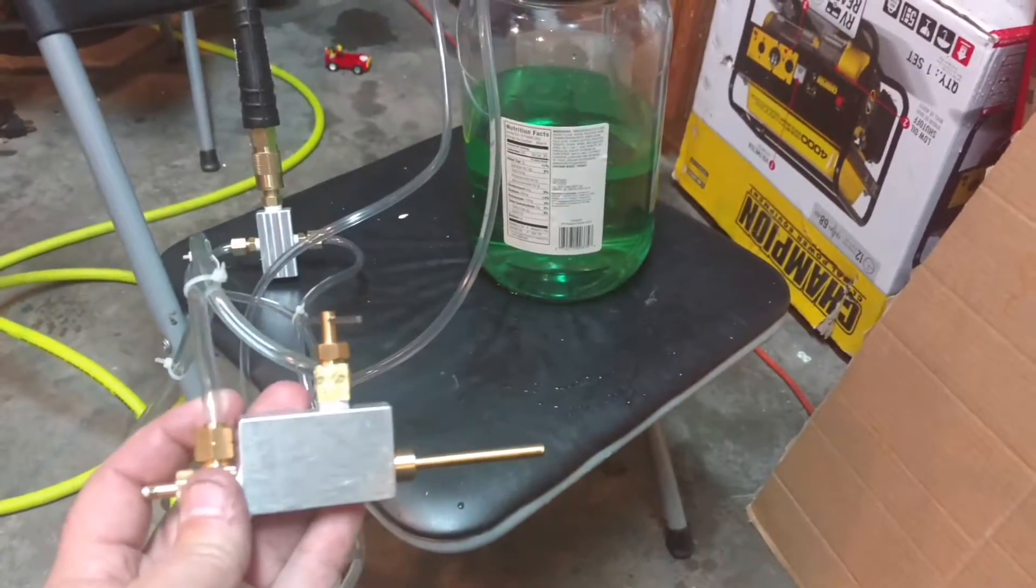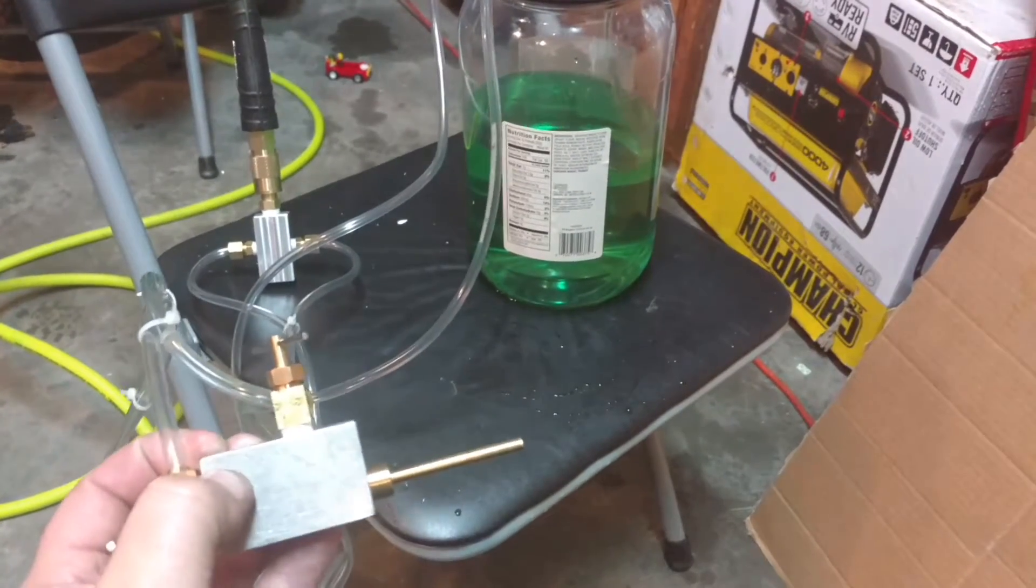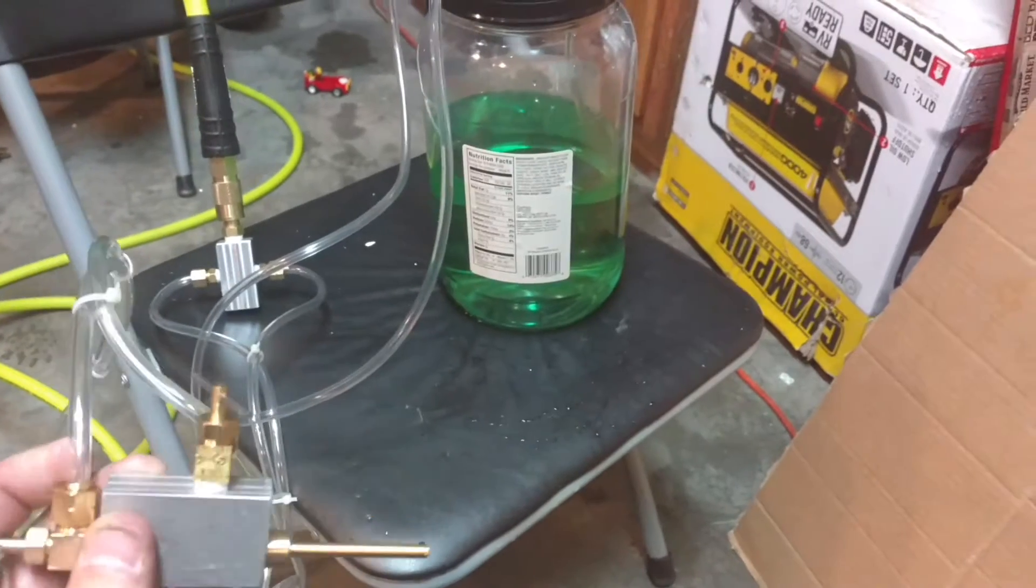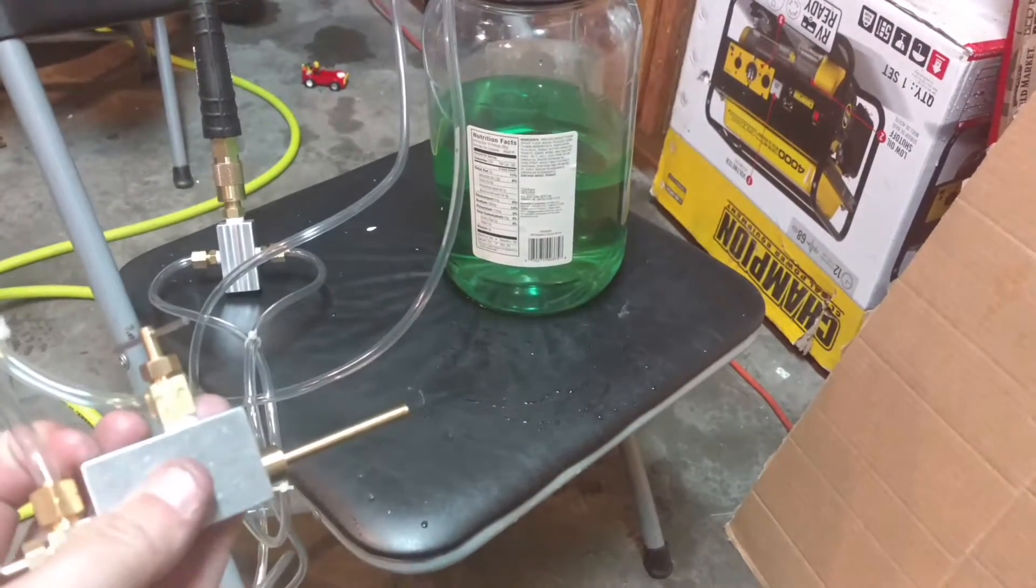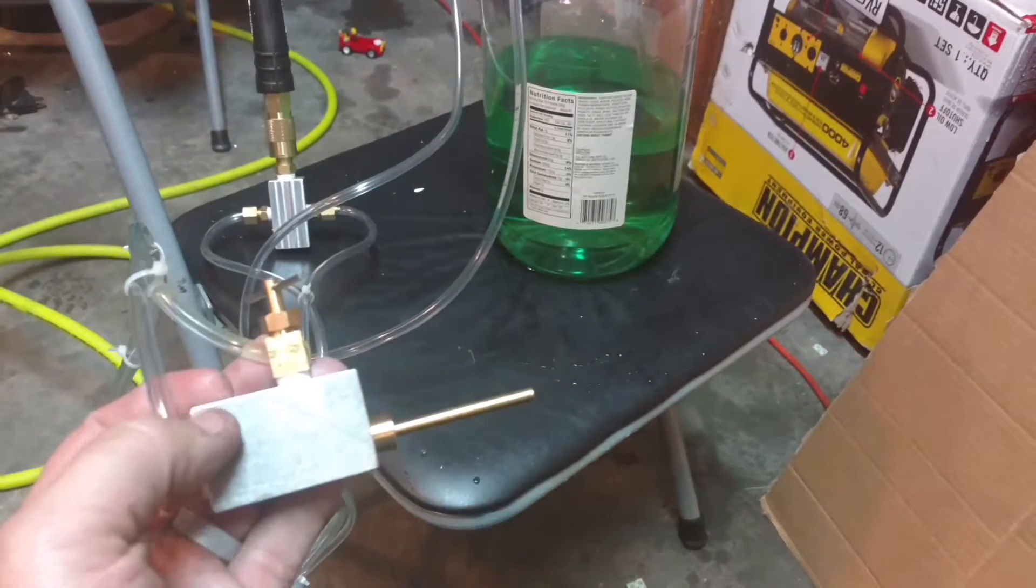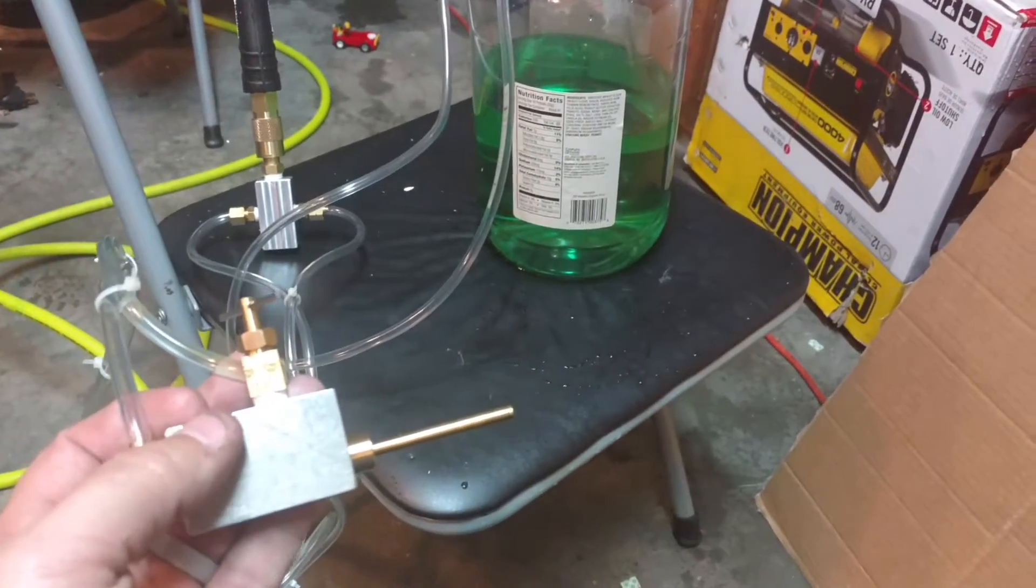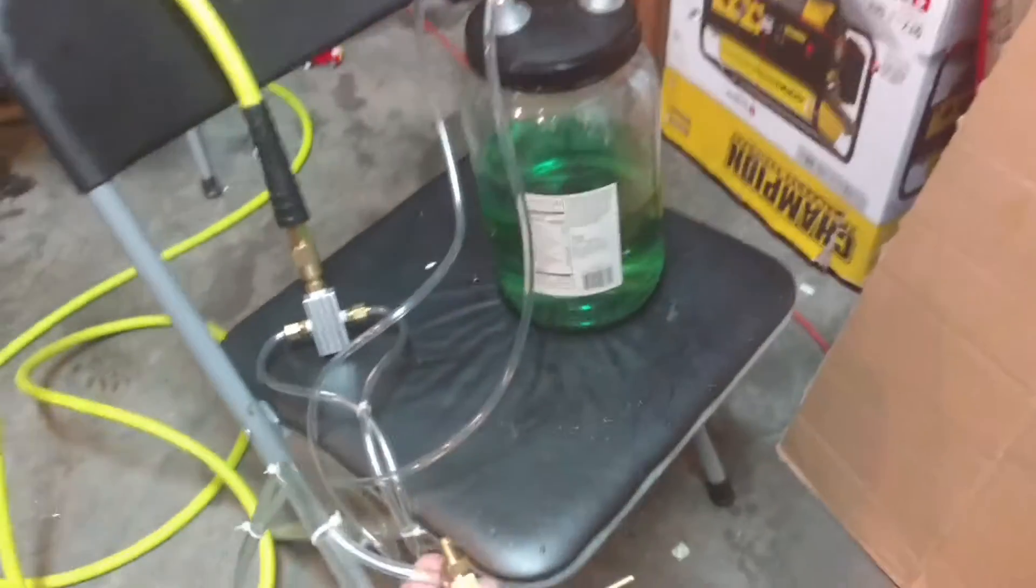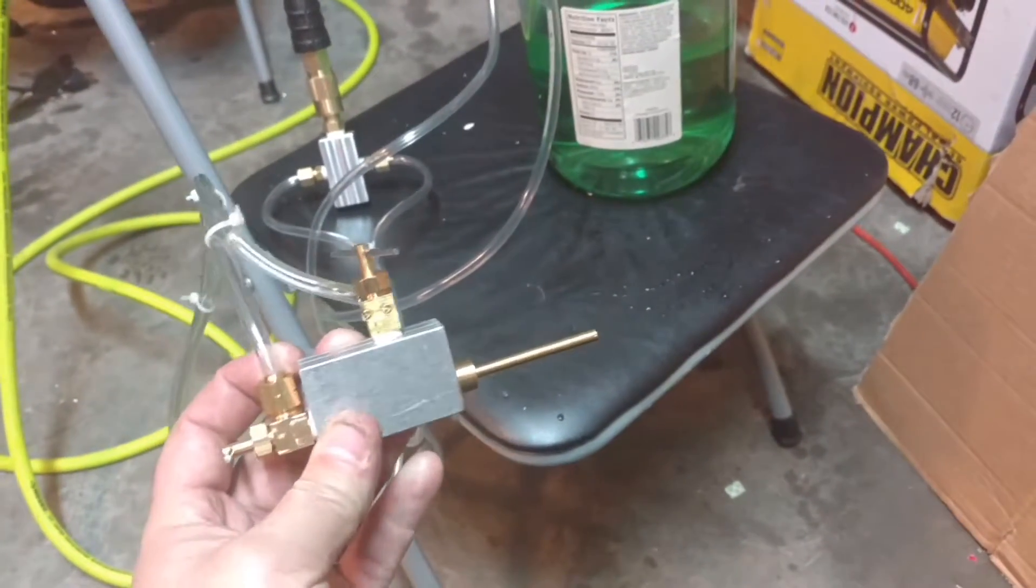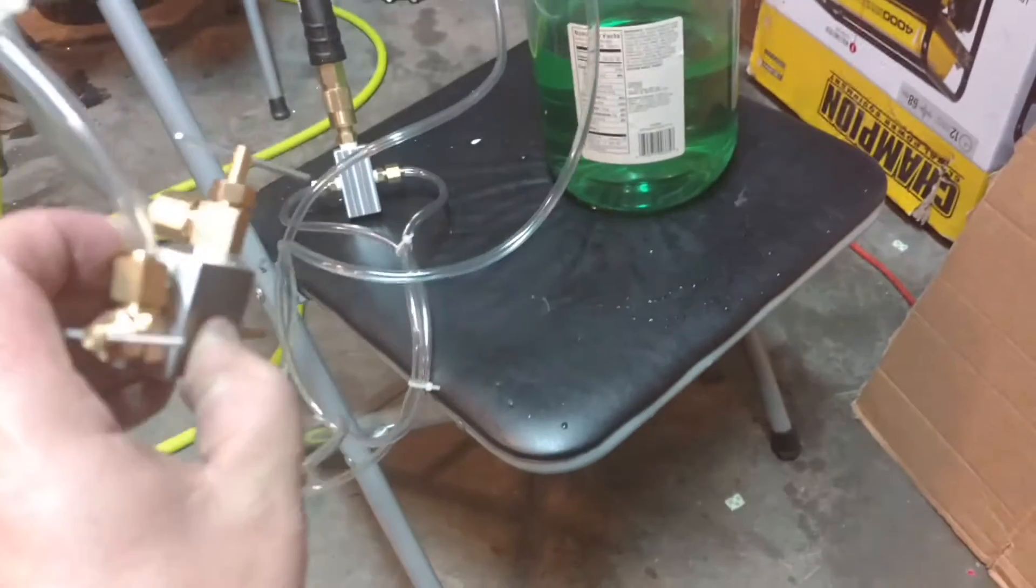So now we've just got to drill and tap right here for a quarter-20, and then that way I can put in a quarter-20 rod with the three-eighths diameter shank on it. And then the indicator holder can grab onto that, and then we can position it however we want with the indicator holder.